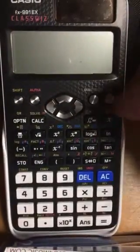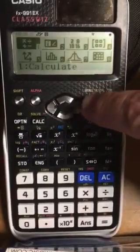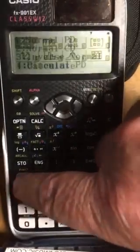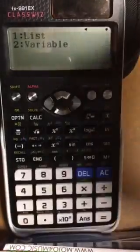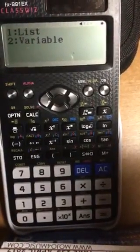So obviously you need to switch it on. Menu and then 7 gives us this screen here. We've got a binomial distribution, so press 4 for that.